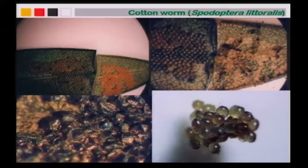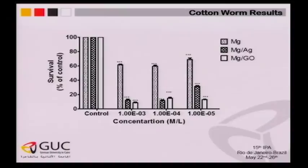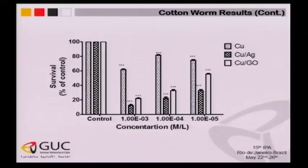That is the cotton worm — a piece of cotton worm paper, from the peas, and here the eggs. Untreated eggs produce the worms which eat all the green cotton plants and make huge damage to the economy. The results are interesting to compare: magnesium chlorophyllin alone versus magnesium-silver nanocomposite or magnesium-graphene oxide nanocomposite. You will find the percentage of survival is reduced by 15 to 20% with nanocomposites, meaning PDT modality with solar energy works well. Copper chlorophyllin derivative, copper-silver nanocomposite, and copper-graphene oxide nanocomposite show similar results.